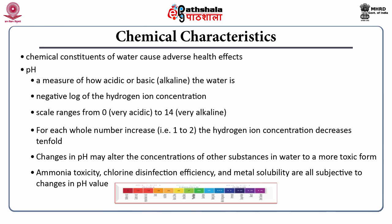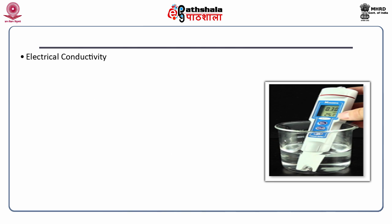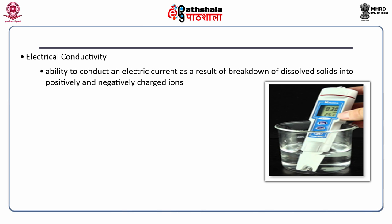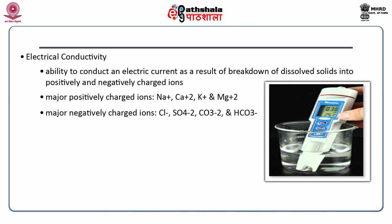The most frequently encountered range of pH in fresh water is 6.5 to 8. Changes in pH may alter the concentration of other substances in water to a more toxic form — ammonia toxicity, chlorine disinfection efficiency and metal solubility are all subject to changes in pH value. Electrical conductivity is the ability of water to conduct an electric current as a result of the breakdown of dissolved solids into positively and negatively charged ions. The major positively charged ions include potassium, sodium, calcium and magnesium; the major negatively charged ions are chloride, sulphate, carbonate and bicarbonate. Nitrates and phosphates are minor contributors to electrical conductivity although they are very important biologically. Conductivity varies with the water source — groundwater, agricultural drainage, municipal wastewater, rainfall — and therefore can indicate groundwater seepage or sewage leaks.